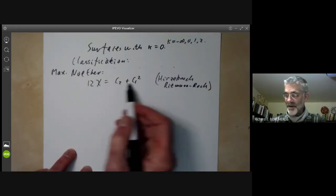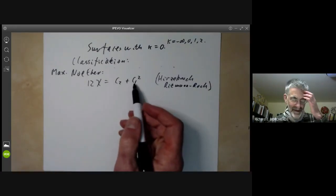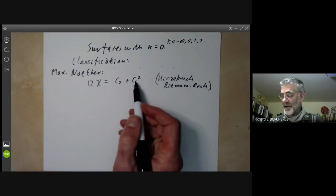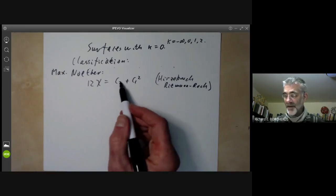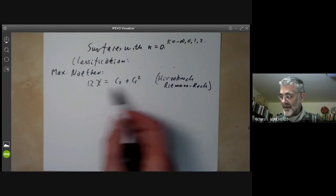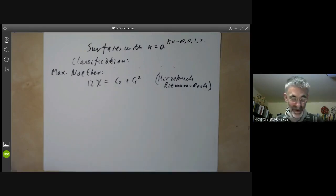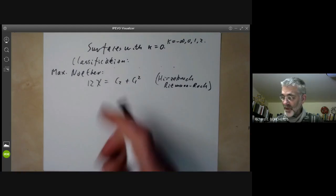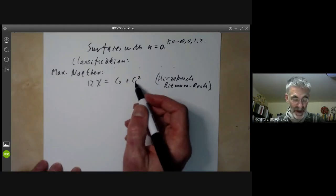Noether, of course, didn't state it in this form. Unfortunately, algebraic geometry notation completely changes every few decades. So Noether's original statement is almost impossible for people to understand if they've grown up with modern notation.